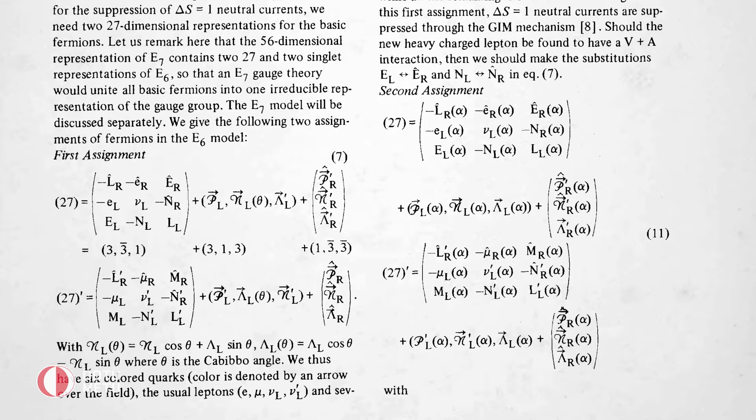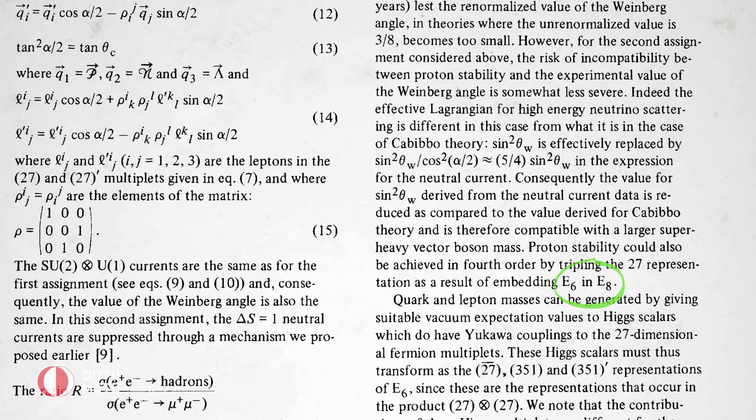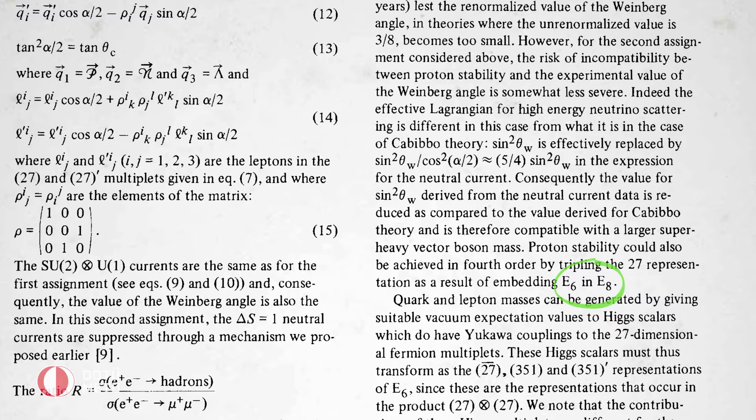The standard model that defines the observed particles and their interactions runs through these mathematical groups, and one of them, E-8, has a natural place in string theory.